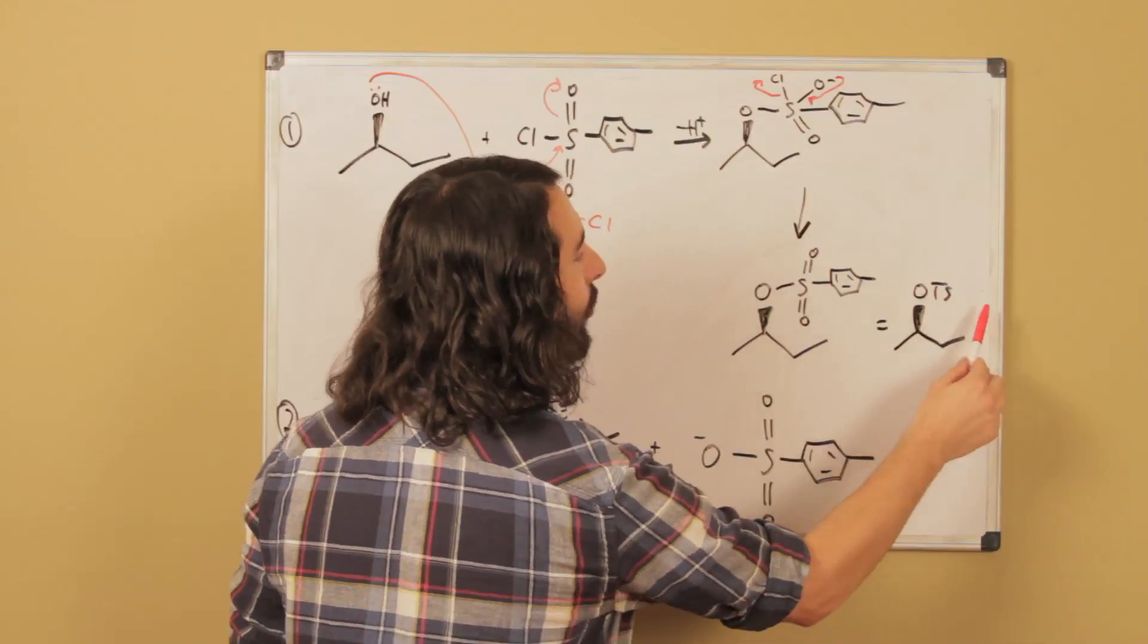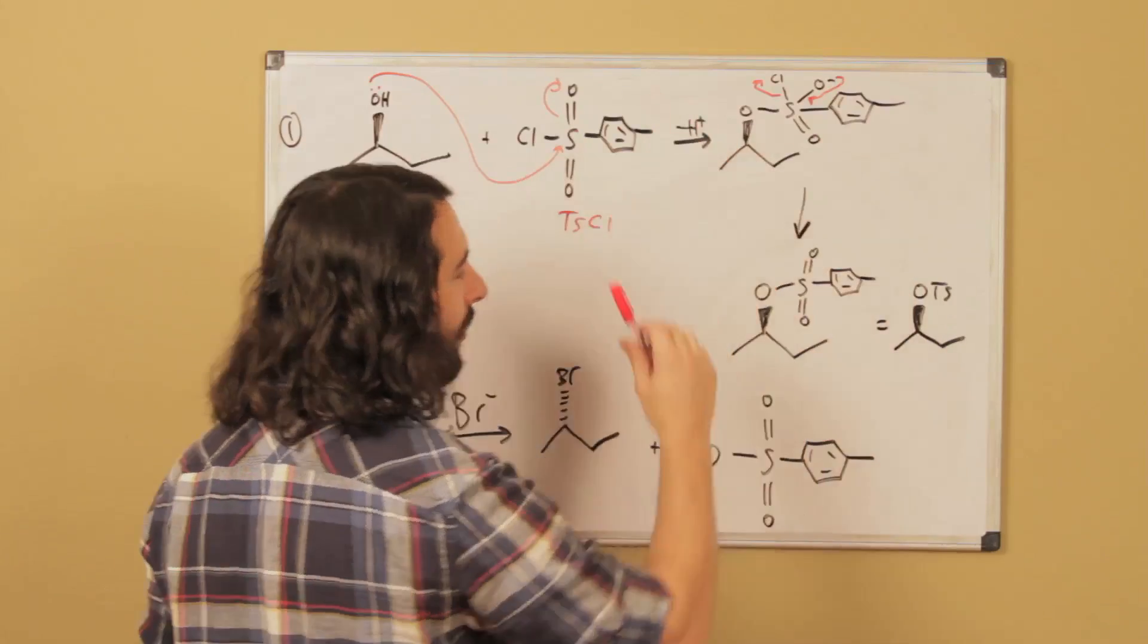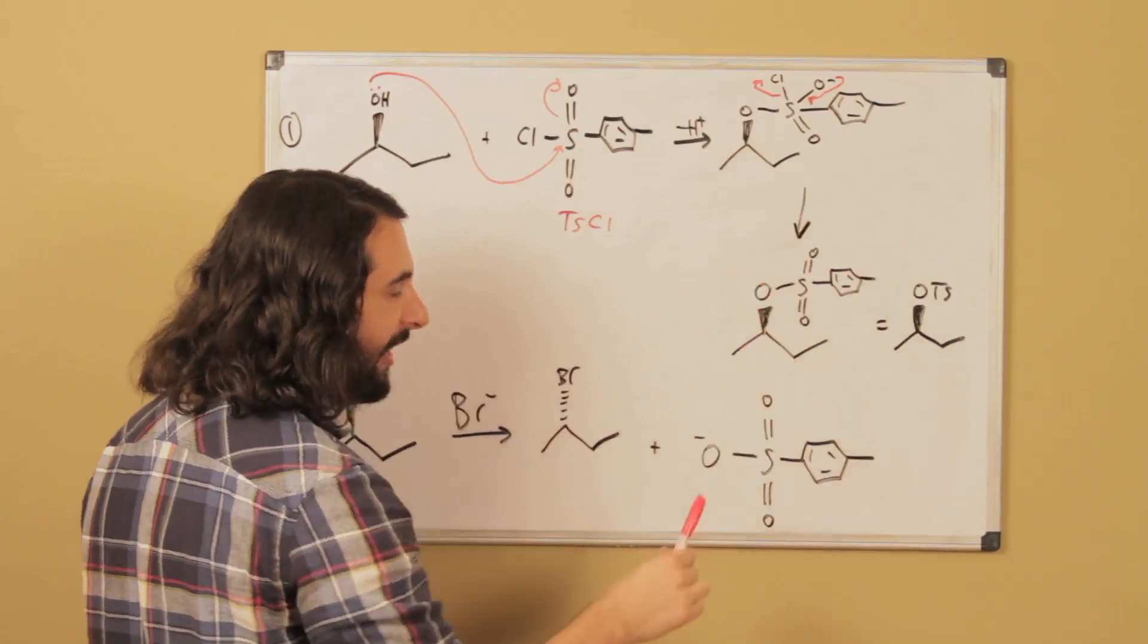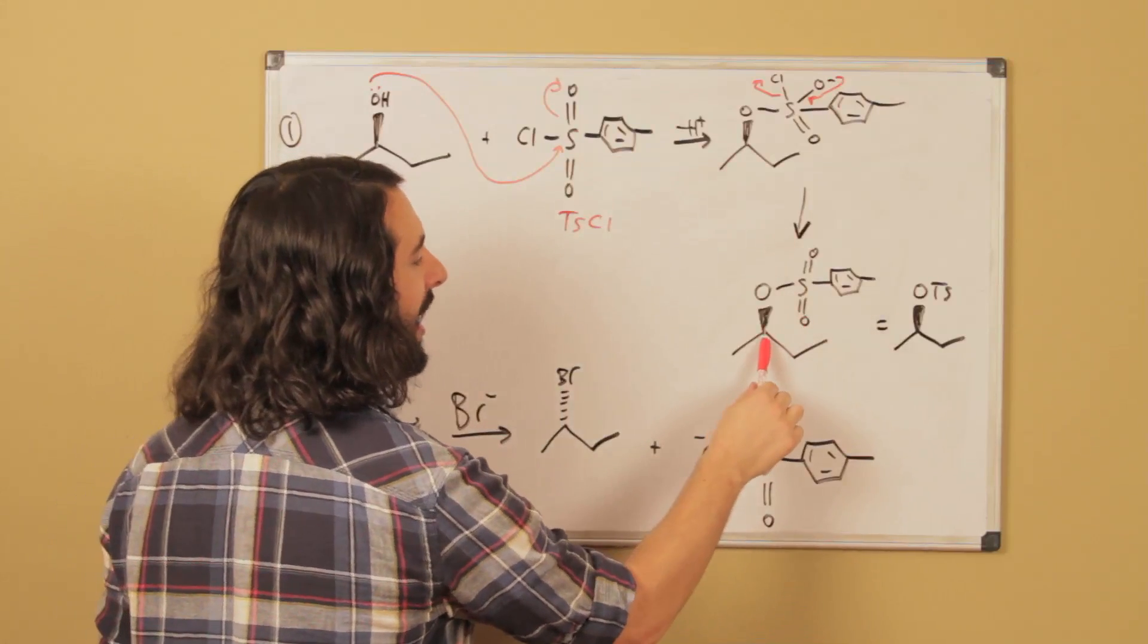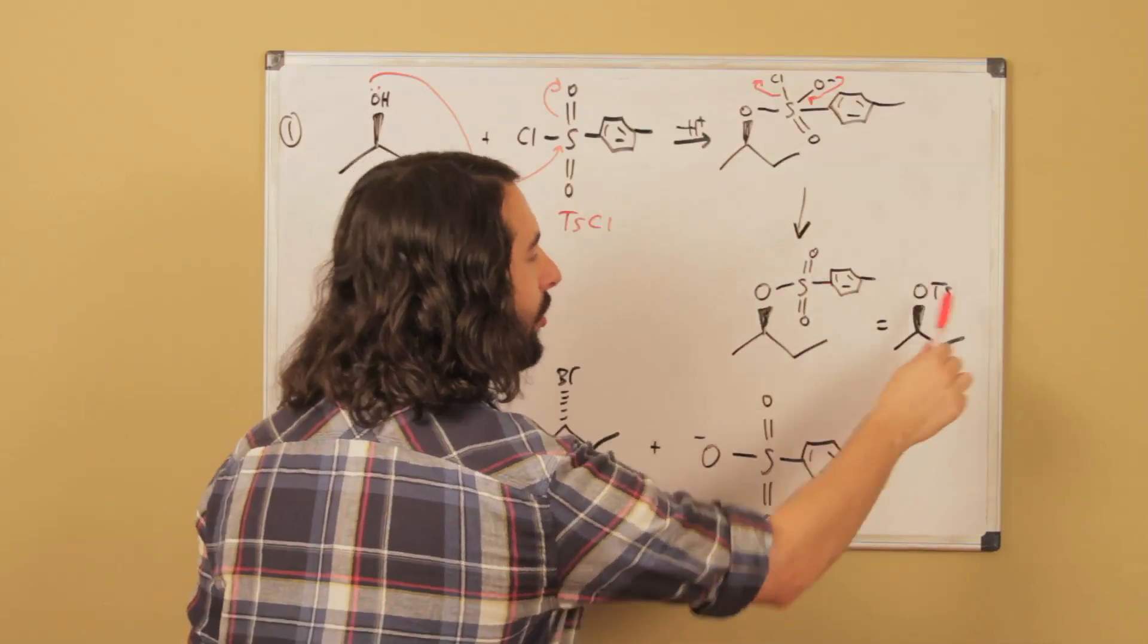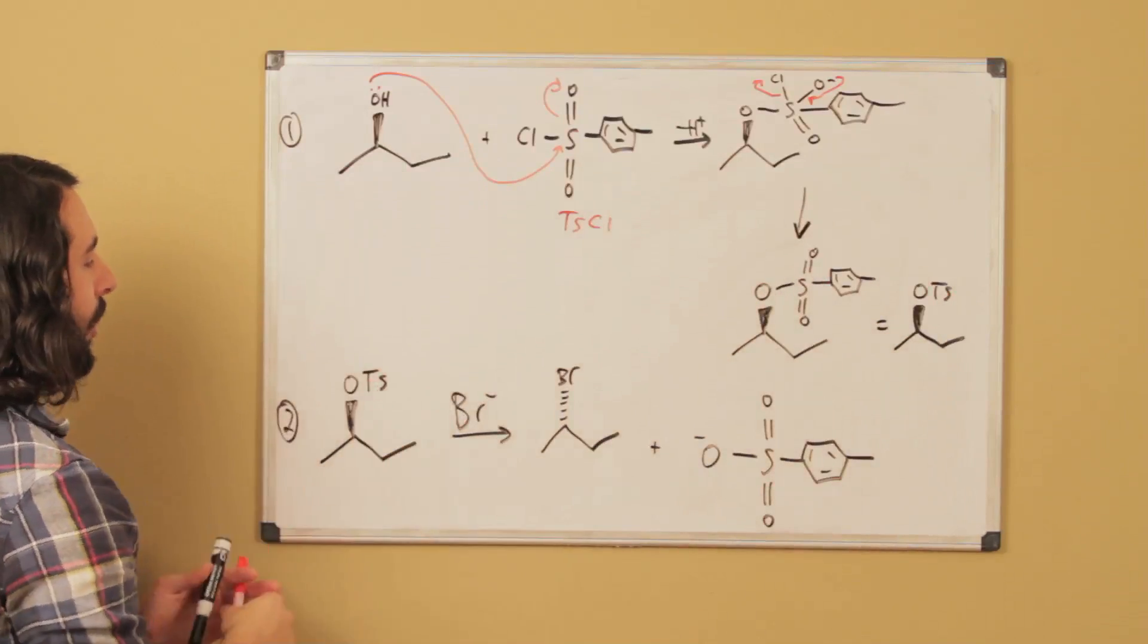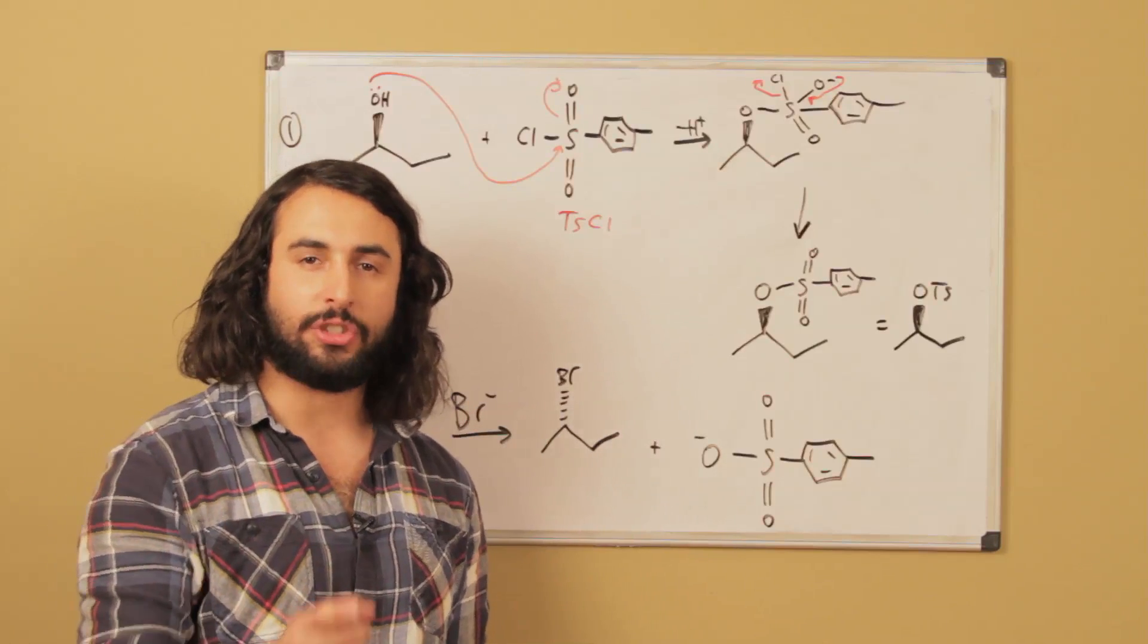So here's an interesting thing - we have completely changed the reactivity of this center by turning this from OH into O-tosyl. Because before, OH was a terrible leaving group for the SN2 reaction, but now we'll look at what happens.